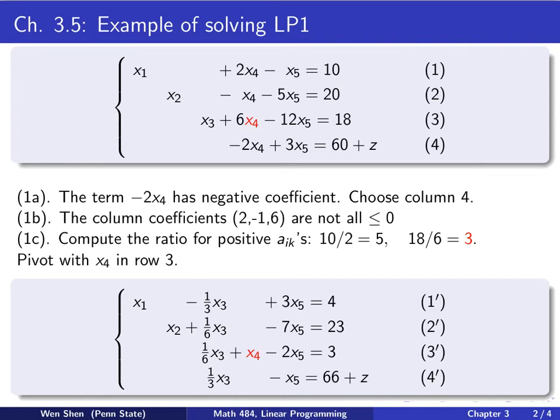So you see now I have x1, x2, and x4 as basic variables. And the basic solution will be x1 is 4, x2 is 23, x4 is 3. And at that basic solution, the value z is negative 66, where here the value z is negative 60. So we see that we actually make the z smaller by this step.